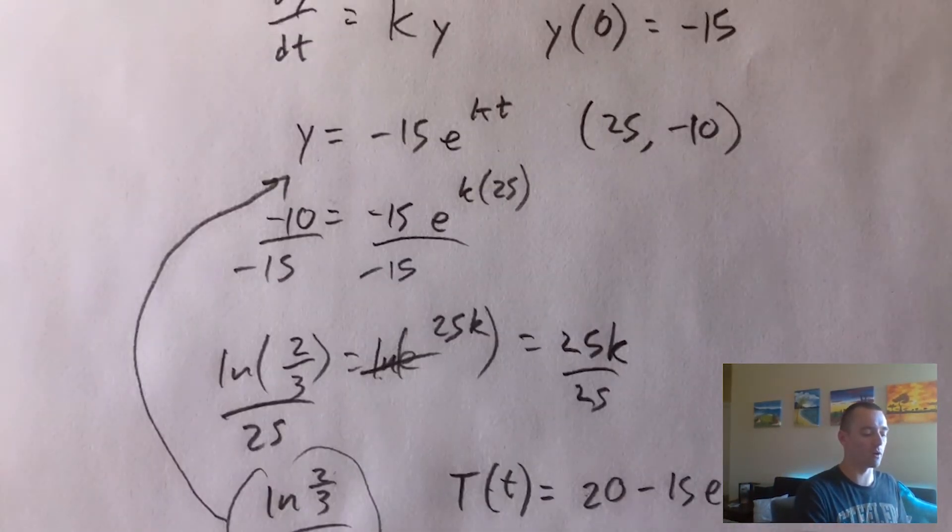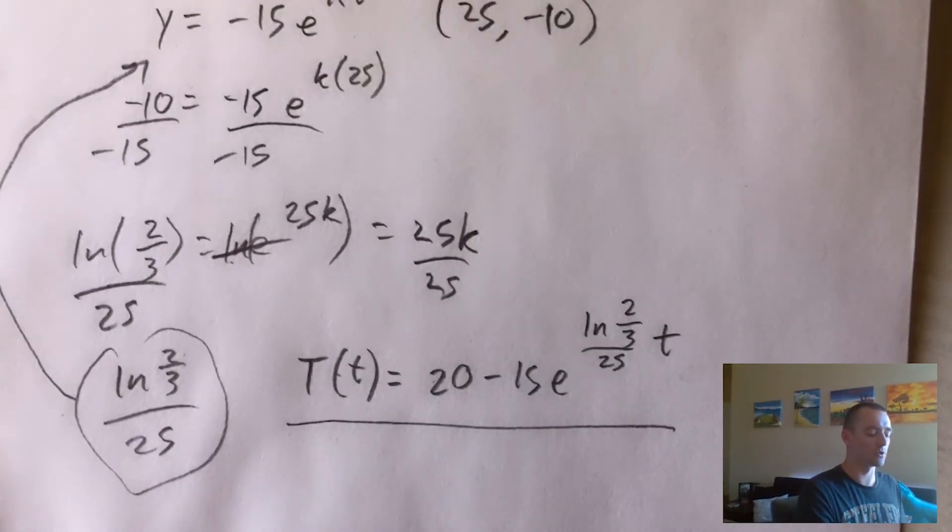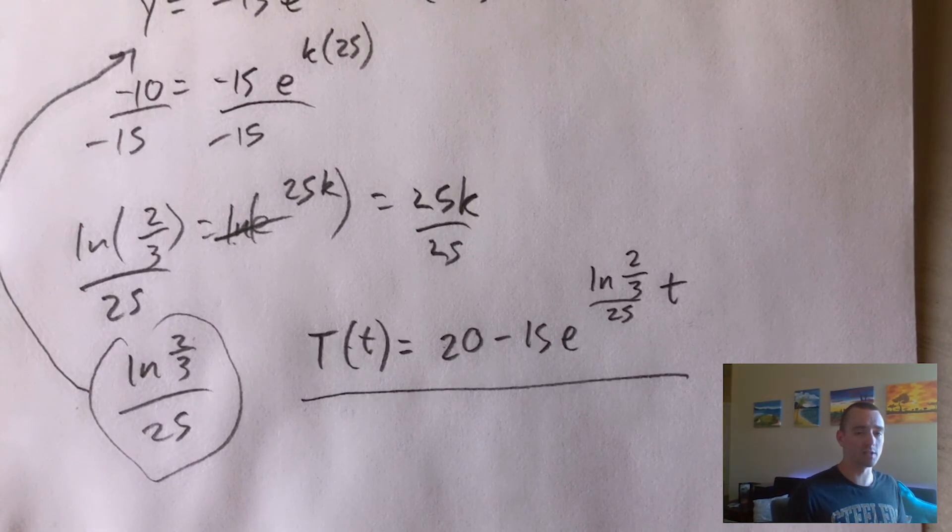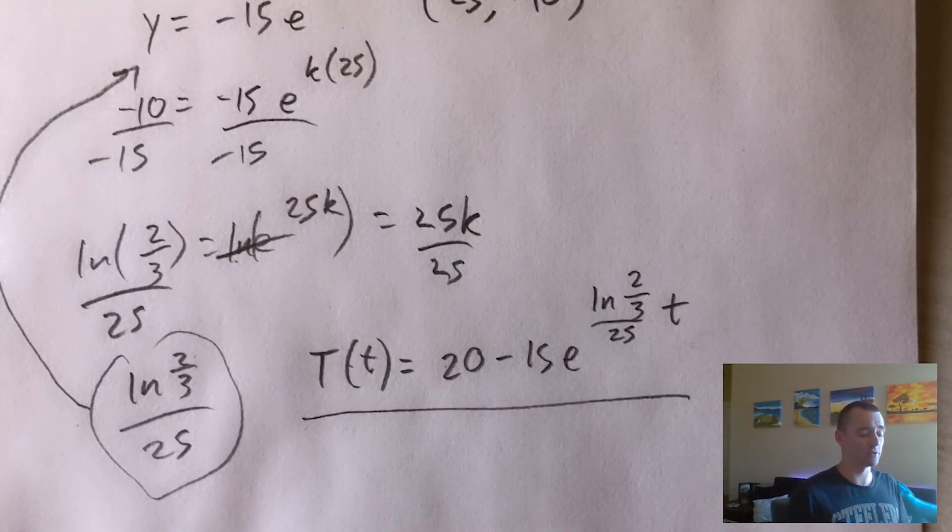And then if we want to put in 15 for the temperature over here and solve for t, we would do the same kind of arithmetic operations that we just did up here. You know, subtract the 20 over, divide by negative 15, take the natural log to cancel out the e, and then you just get t all by itself. And that's all there really is to that problem.